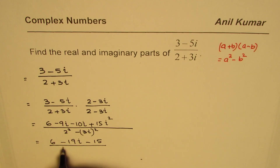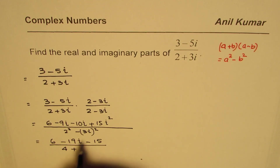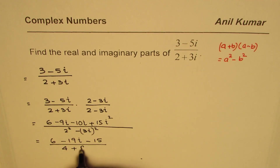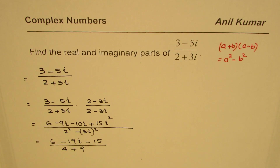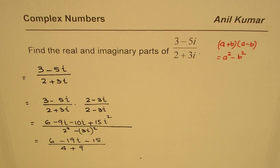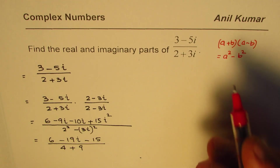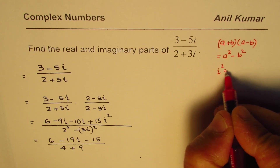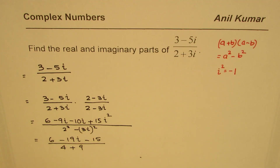In the denominator, we get 4 plus 9 — since (3i) squared is 9i squared, and i squared is minus 1, the sign changes to plus, giving us 4 plus 9.